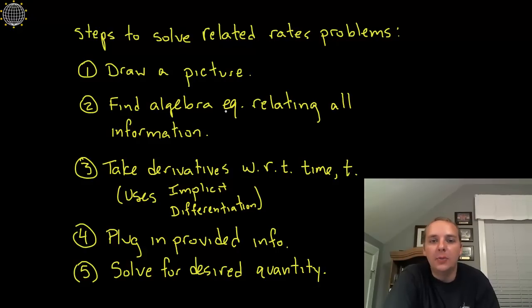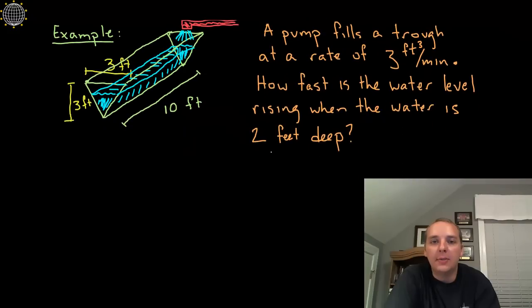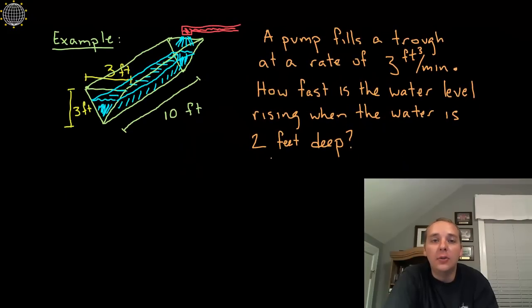Step number 2: find an algebra equation relating all information not counting the rates. The rates will come later. When I look at this, some things catch my eye that I know I'll use and some things I know I won't use. I think the dimensions of the trough would be important. I see things like volume, cubic feet, that sounds important. But when I see things like 3 cubic feet per minute, that rate, I don't think I'll be using that quite yet. I think our main formula here is going to be the volume of water in this trough based off of what they're telling us here.